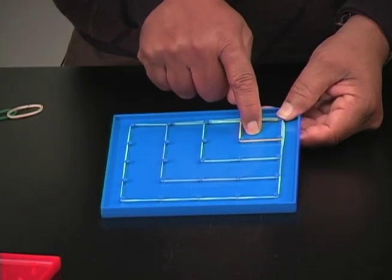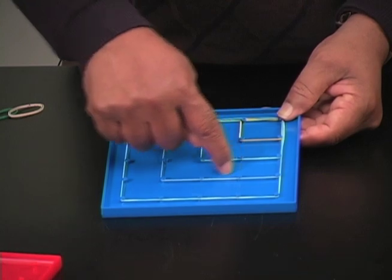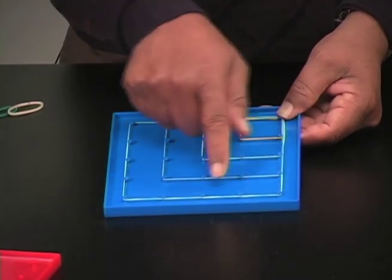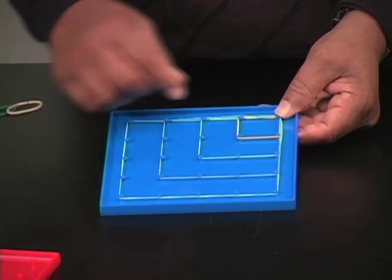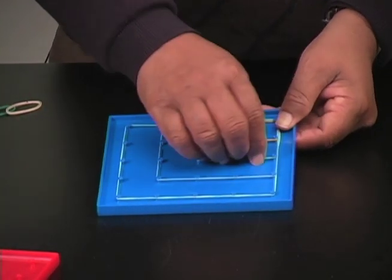The area of this is 1 square unit. The area of this is 4 square units. The area of this, as you can see, 3, 6, 9 square units. And the area of this is 1, 2, 3, 4 times 4, 16 square units.